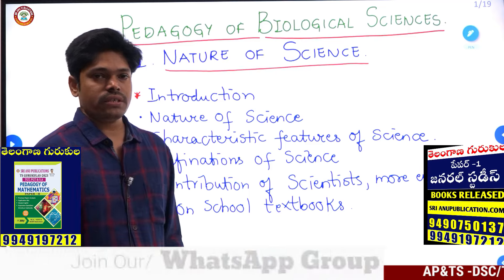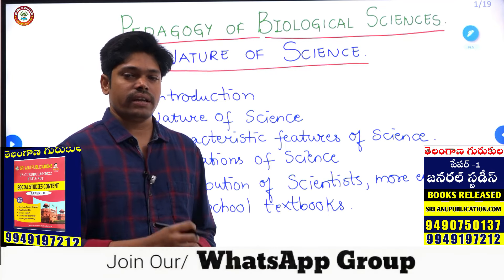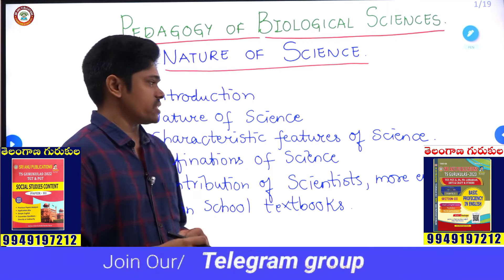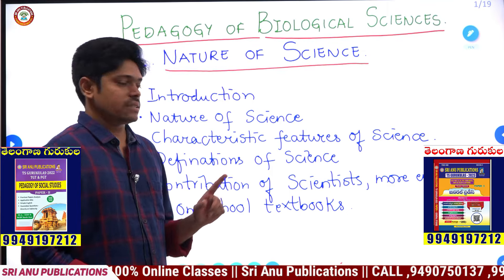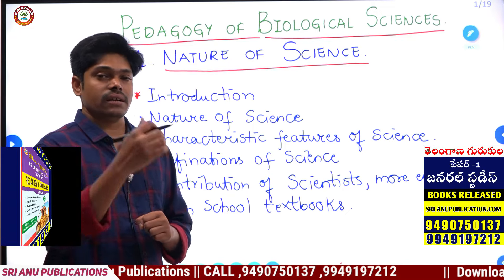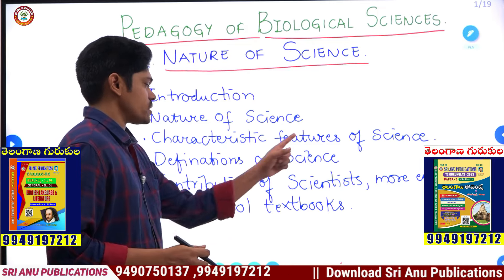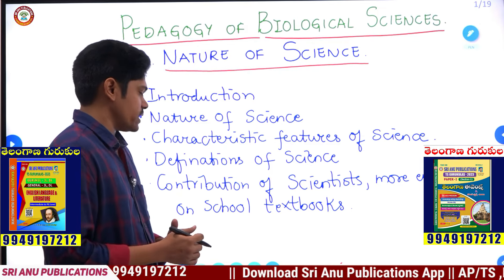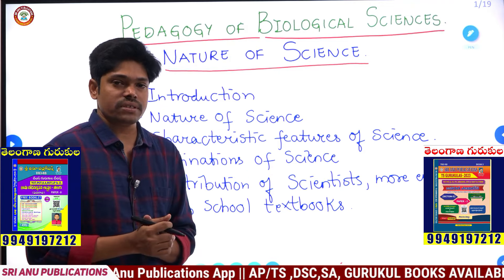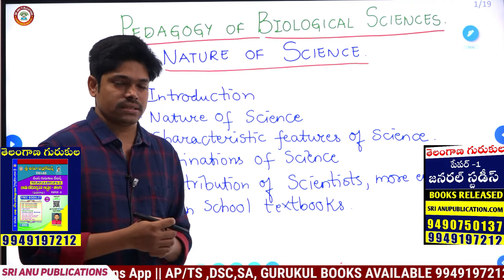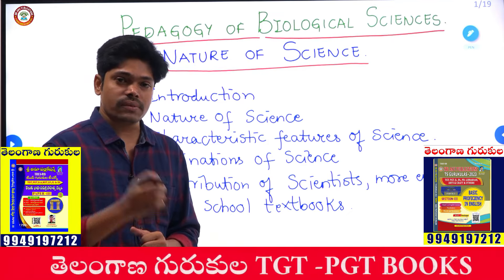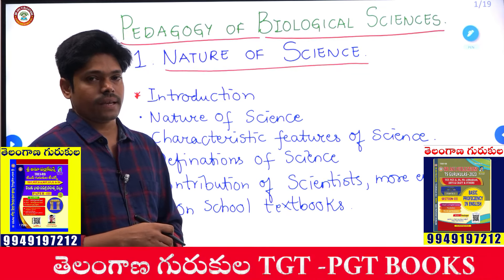Our first unit is Nature of Science. In this Nature of Science, let us learn subtopics such as: introduction to the nature of science — what science is and how the term science was developed — characteristic features of science, definitions of science, contributions of scientists, and more emphasis on scientists discussed in school text books.